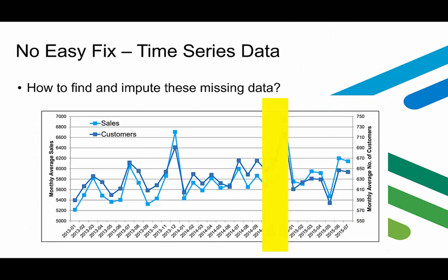Here's an example of how tricky this task can be. This is time series data for monthly average sales and the monthly average number of customers. We find that information is missing for October, November, and December of 2014. We cannot simply impute values from the mean or median, since December might be a peak. We also cannot delete these three months as they are very important. The best approach seems to be to use data from the same months of the previous year, even though we cannot be 100% sure that 2014 follows the same trend as 2013.